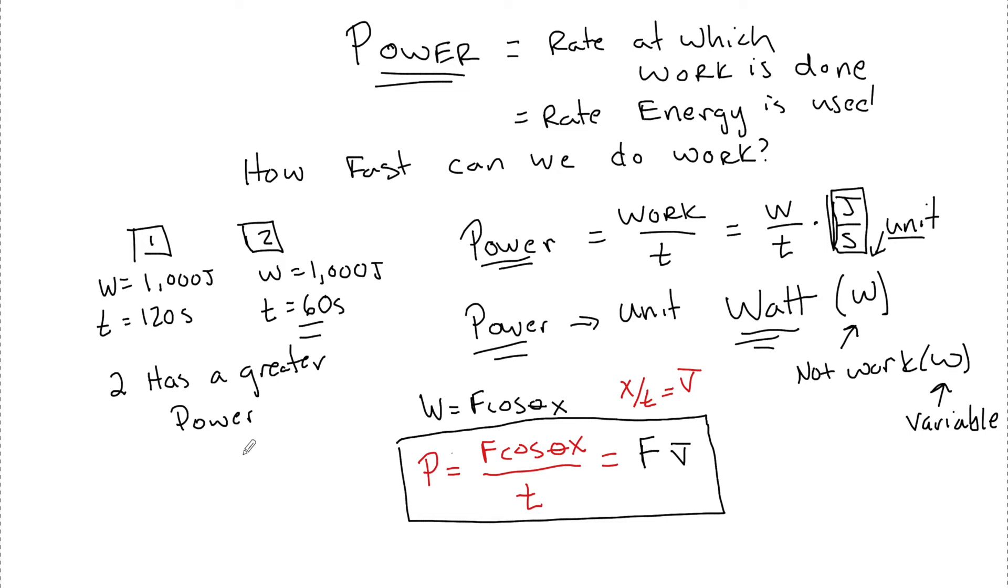So let's take a look at some examples of how we can use these formulas to solve for power. Let's say I have a box, and this box has a mass equal to 75 kilograms. And I am going to apply a force to this box, F A, to move it a displacement equal to 6 meters. And I want to know how much power is outputted, if it takes 20 seconds to complete that action. So we'll come up here. We'll say power equals force times distance over time.